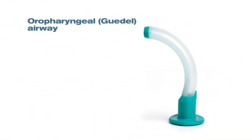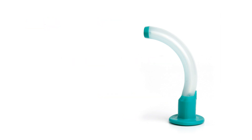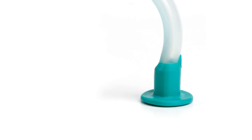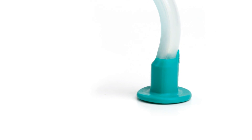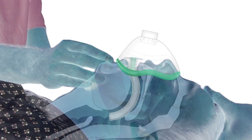They consist of a flange, a rigid bite block and an anatomically shaped body. For safety purposes, the inter-surgical oral pharyngeal airway has been designed without the conventional bite block. The one-piece design overcomes the risks of dislodgement of the bite block, which could actually cause an obstruction of the airway.